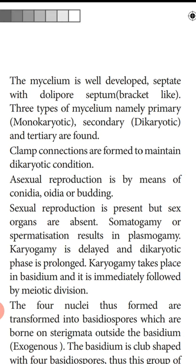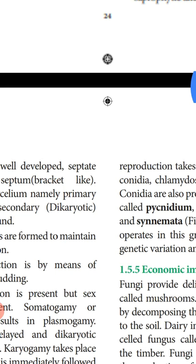Clamp connections are formed to maintain the dikaryotic condition. After plasmogamy — fusion of cytoplasm of two compatible hyphae — two nuclei from two different hyphae are present together inside the cytoplasm, represented by two different colors (red and violet). Karyogamy does not take place immediately. The hypha then starts extending and gives a clamp-like connection, with some upward growth forming the clamp.